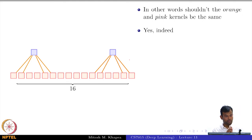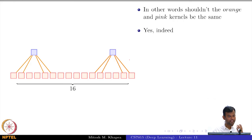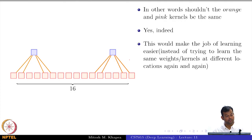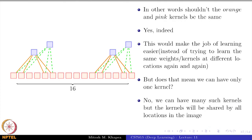Now this might seem problematic — with weight sharing, layer 1 has only 4 weights, which seems too few and could lead to underfitting. How do we deal with this? We use multiple kernels. One kernel detects one thing, another kernel detects something else, and you can have as many kernels as you want. The more kernels you have, the more parameters you have — that many times 4 — and that many outputs at layer 1. So these are the two important characteristics of CNNs: sparse connections and weight sharing.